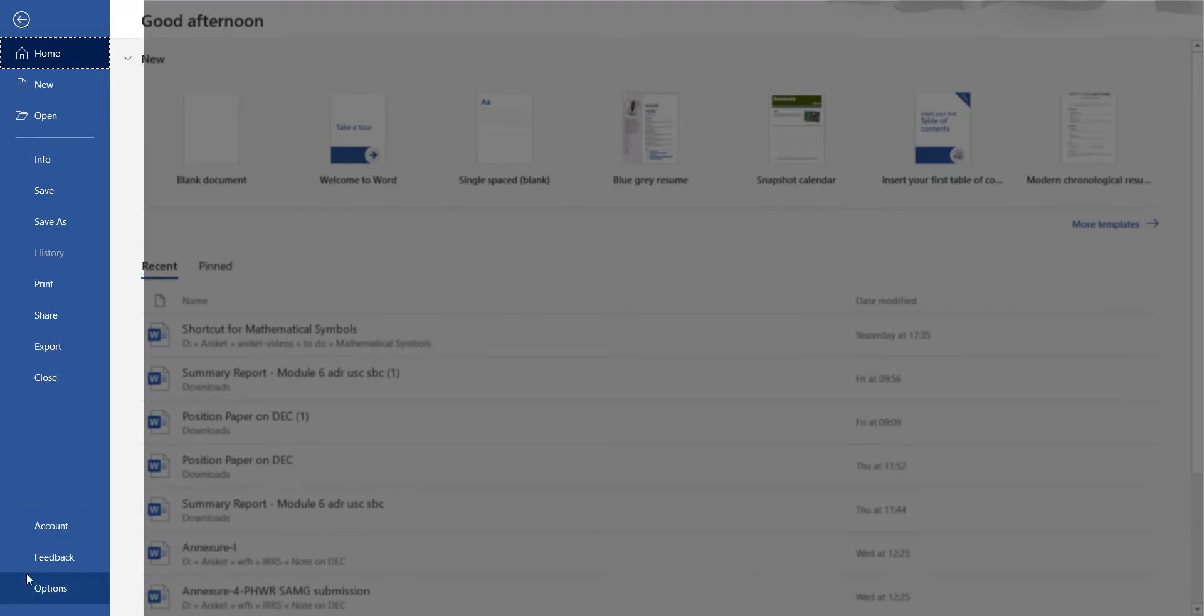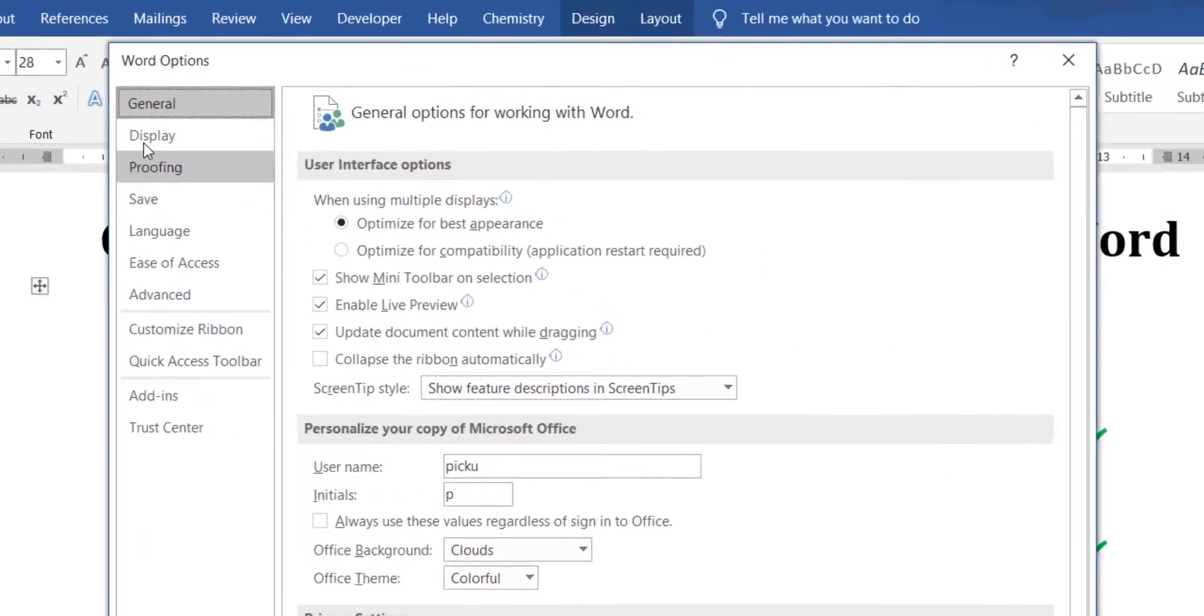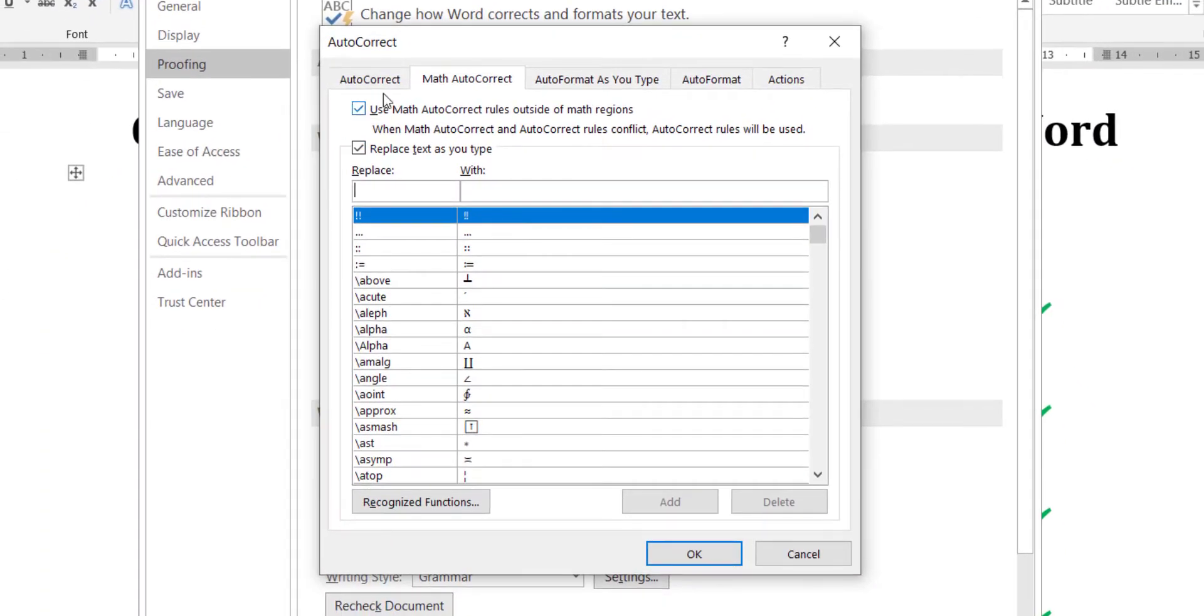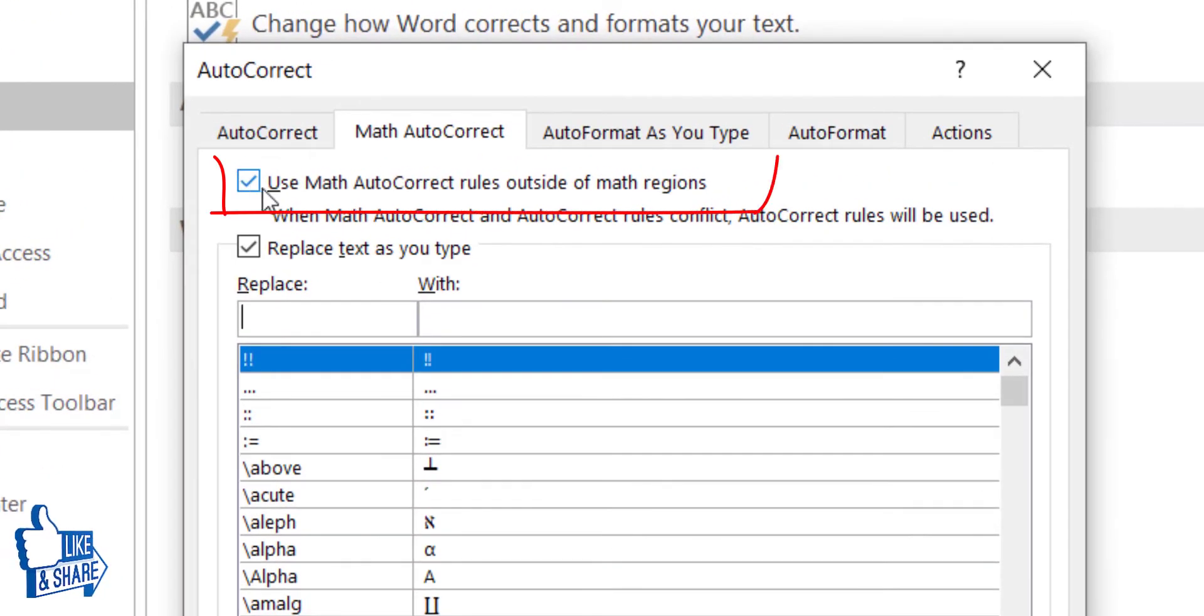In Options, go to Proofing and click on AutoCorrect Options. Here in Math AutoCorrect, make sure that the checkbox which says 'Use Math AutoCorrect rules outside of math regions' is checked.